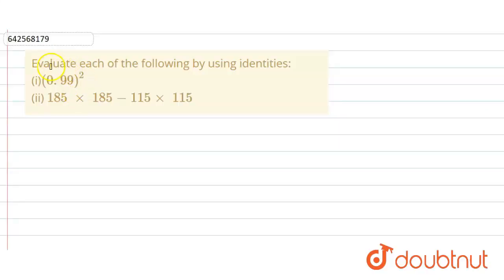In the given question we have to evaluate each of the following by using identities. The first part of the question is (0.99)². This 0.99 square can also be written as (1 - 0.01)².